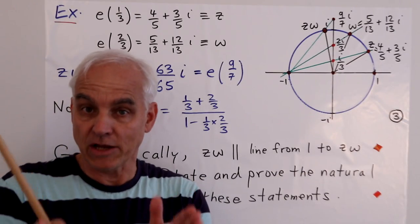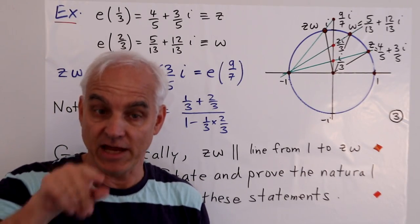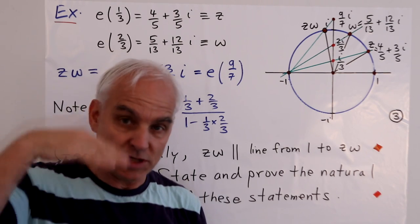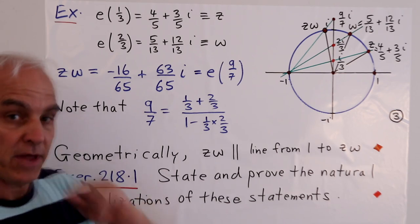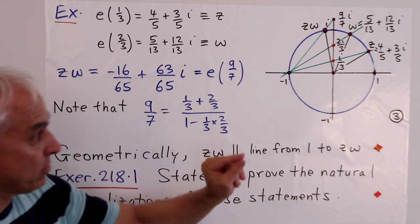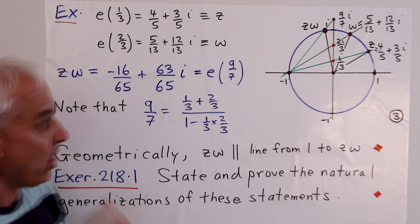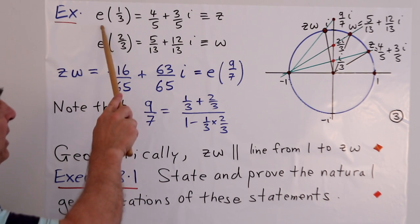The beauty about working algebraically is that we can be precise and specific. We don't have to deal at the level of abstractions, we can exhibit concrete examples. Let's have a look at two particular complex numbers on the unit circle.